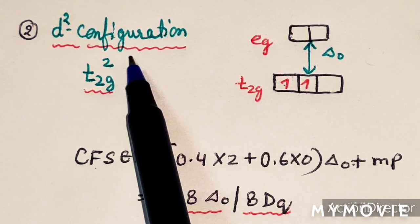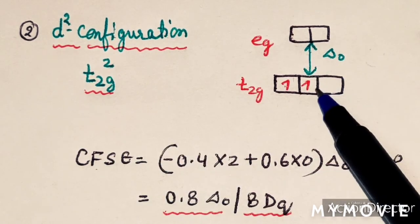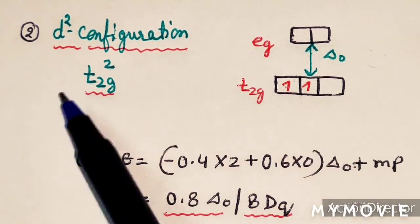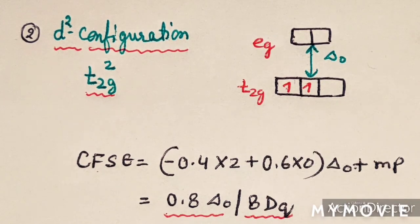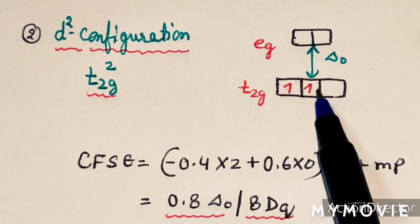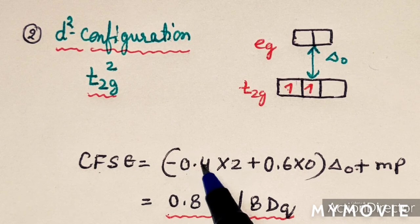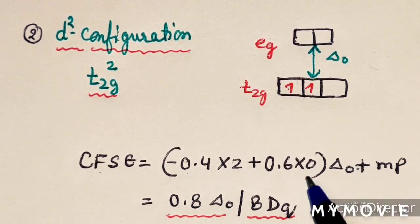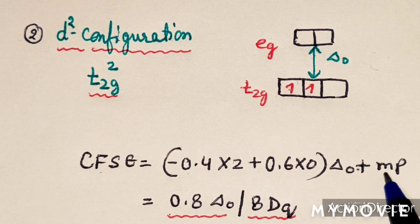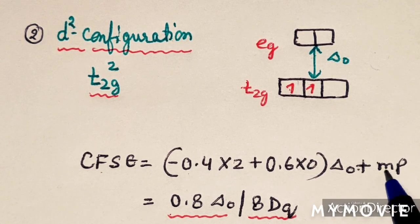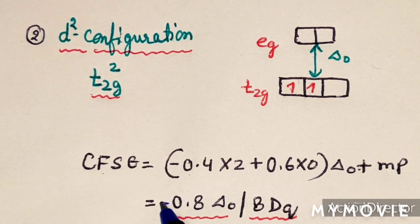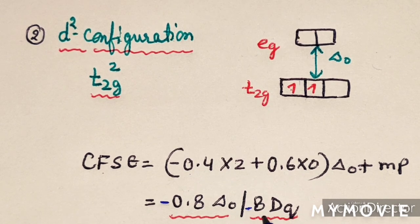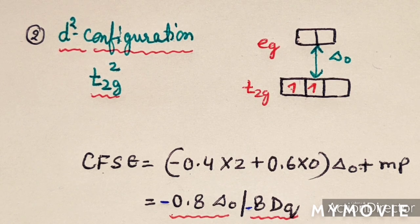For D2 configuration, the electronic configuration is T2G2. Two electrons are in T2G, no electrons in EG, and no paired electrons. So CFSE = 2 × (−0.4) × delta O = −0.8 delta O or −8 DQ.